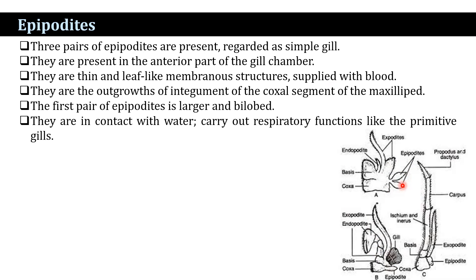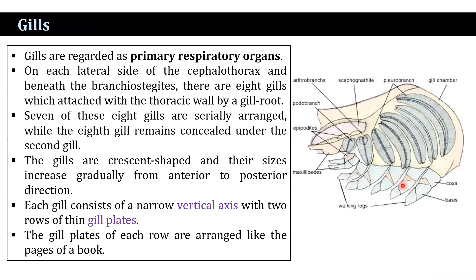The gills are regarded as the primary respiratory organs. On the lateral side of the cephalothorax, beneath the branchostegites, there are eight gills.